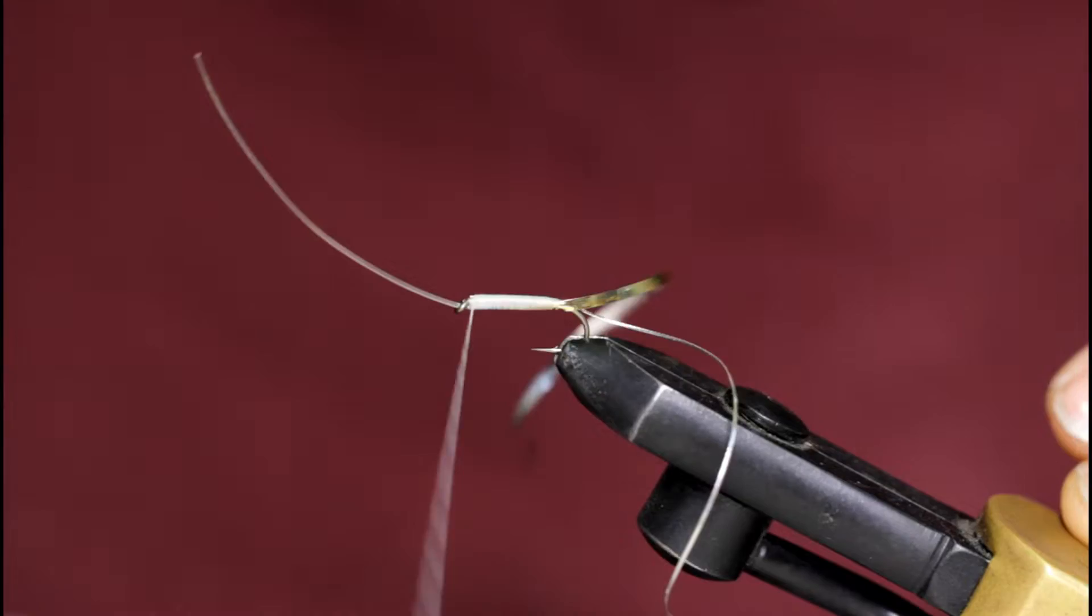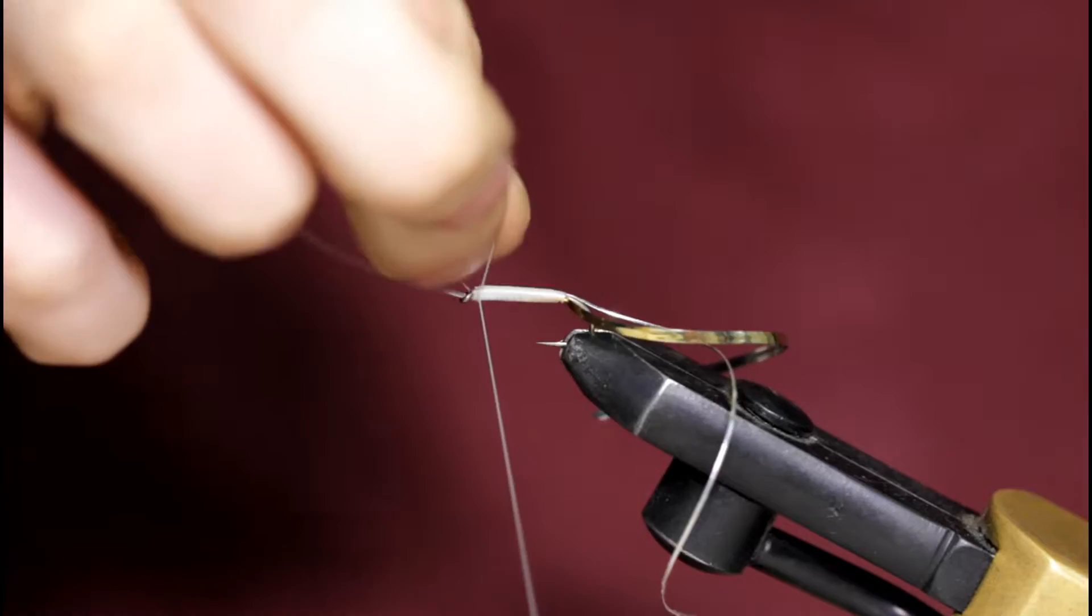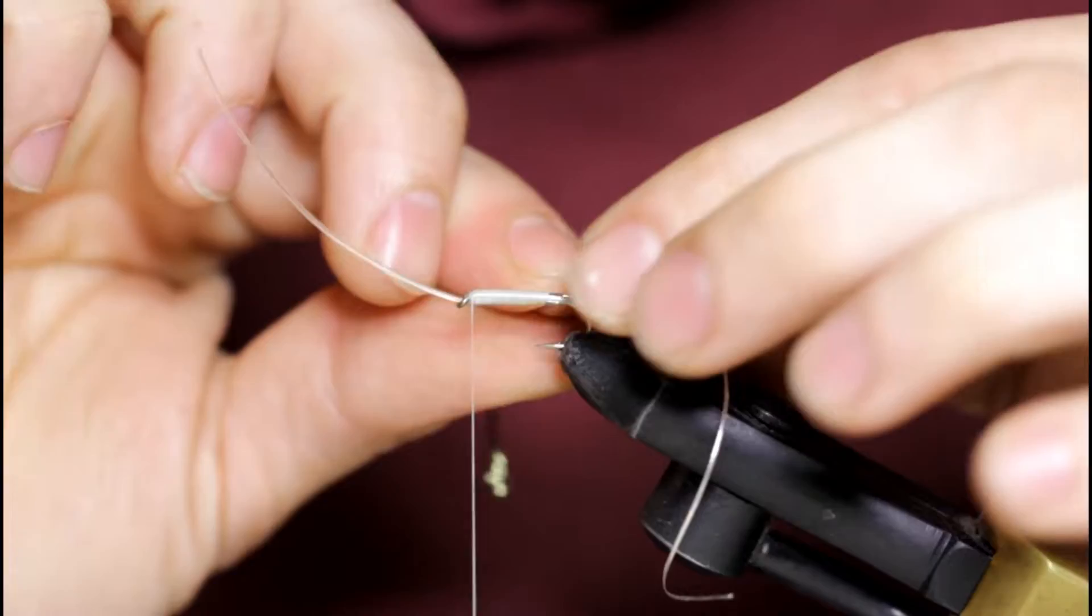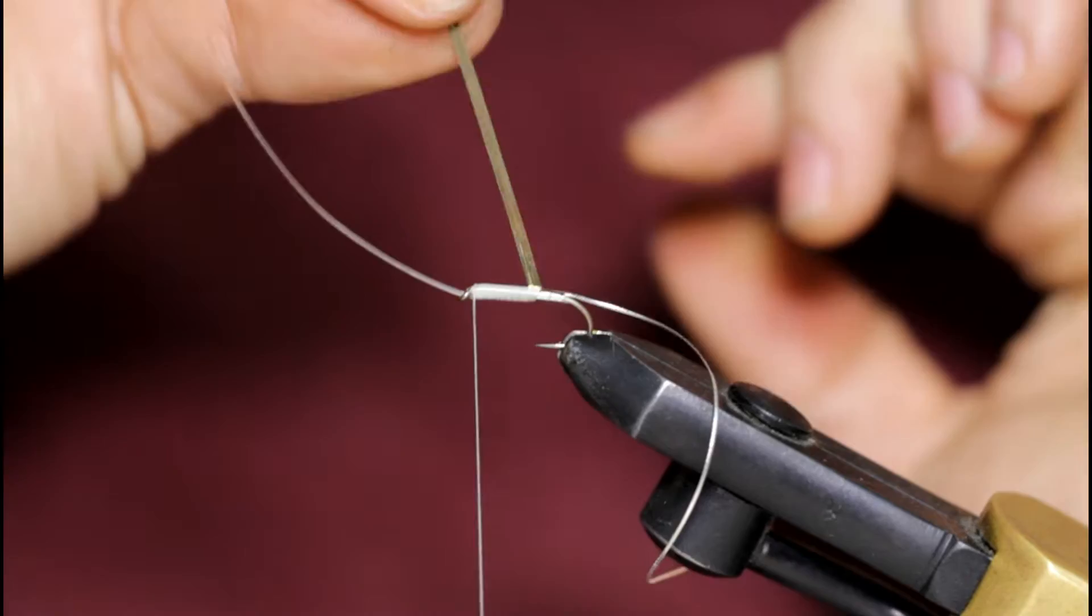Now I'll throw a couple half hitches in, now I'm going to wrap forward with a silver tinsel, even touching turns, wiggle it back and forth to get it to seat in there better if you're having a problem. As long as your body is even, that should help you wrap it a little better.